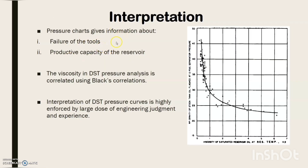The pressure chart gives information about failure of the tools, which is obtained from papers published by Black, and the productive capacity of the reservoir — whether it has high or low permeability. The viscosity in the test is obtained from the API gravity versus viscosity plot. Interpretation of the DST pressure curves is highly dependent on engineering judgment and experience.